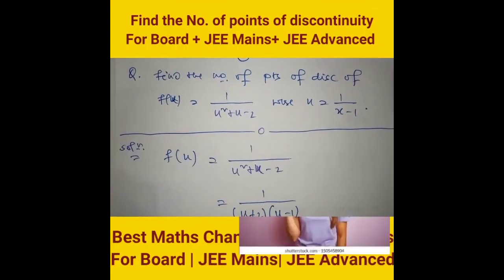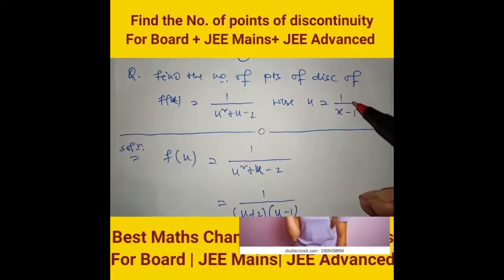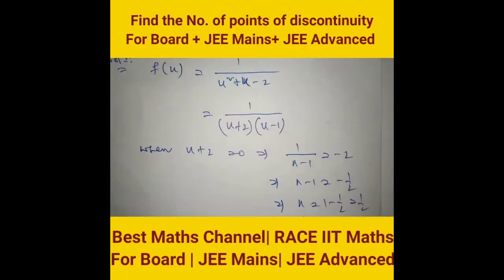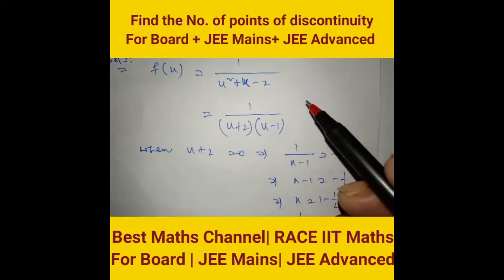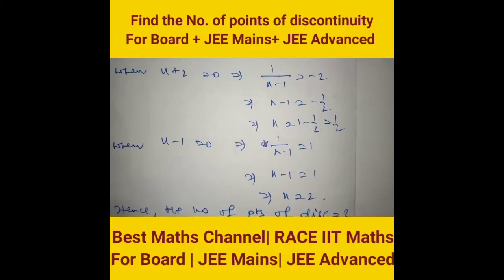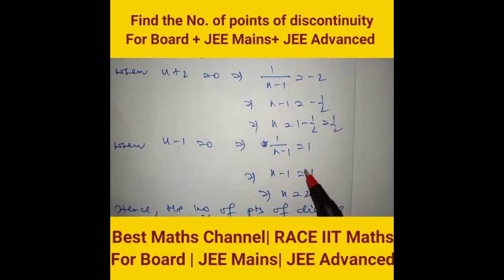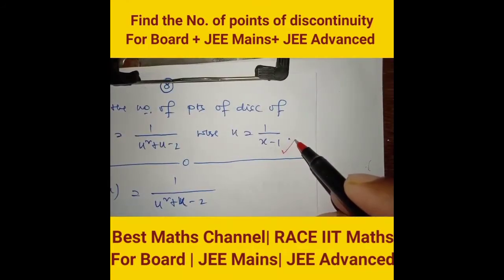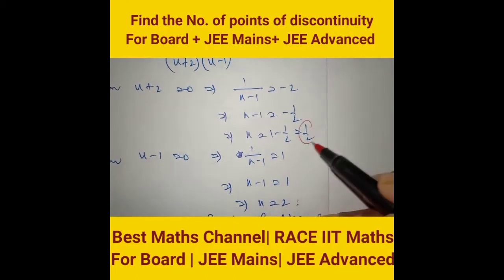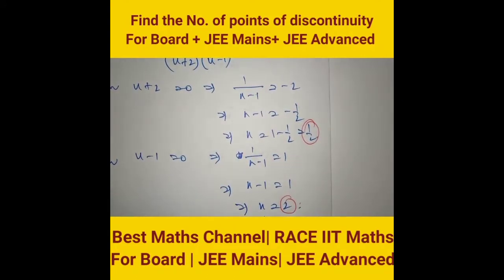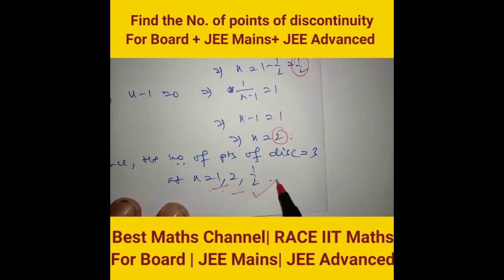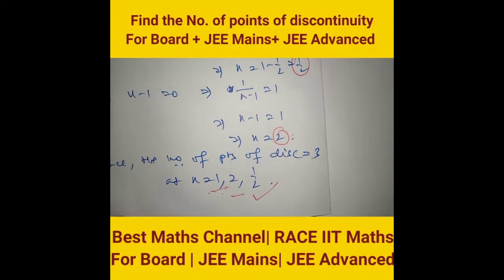Find the number of points of discontinuity of f(u) = this, where u = 1/(x−1). The function becomes (u+2)(u−1). Wherever the denominator is zero, the function is undefined and discontinuous. u + 2 = 0 gives x = 1/2; u − 1 = 0 gives x = 2. Combined with x = 1 from u itself, number of points of discontinuity is 3, at x = 1, 2, and 1/2.